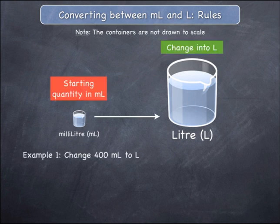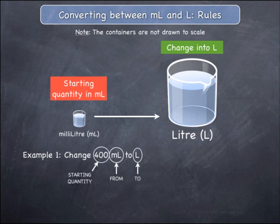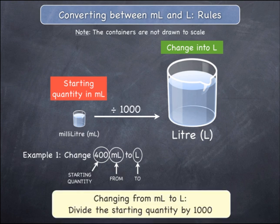Example 1: consider having to change a quantity from milliliters to litres, such as 400 milliliters to litres. You are starting in milliliters and want to change to litres. The starting quantity is 400.